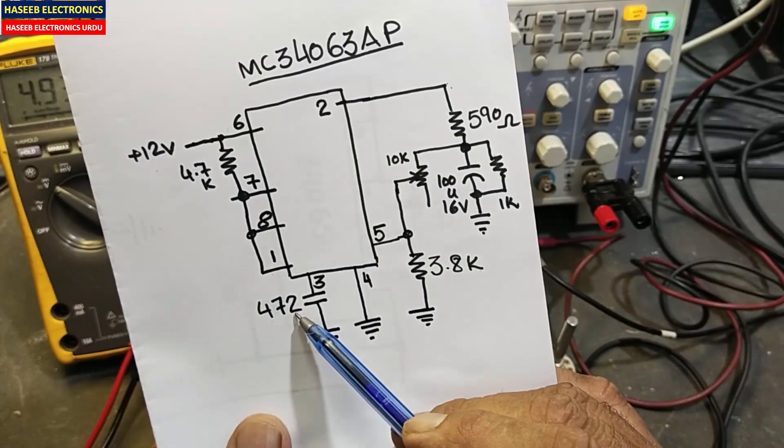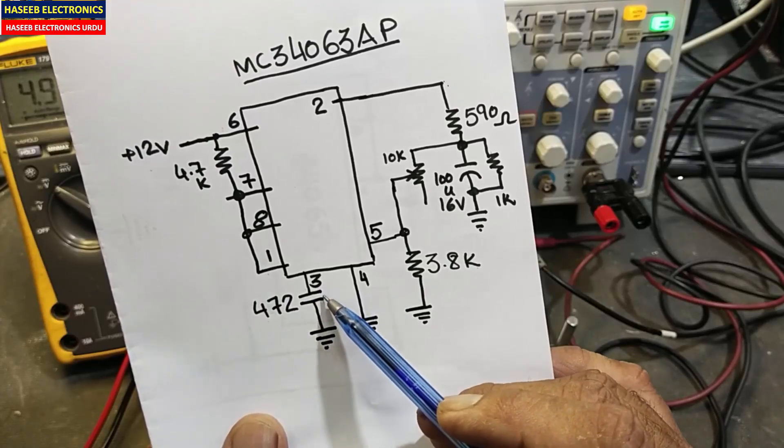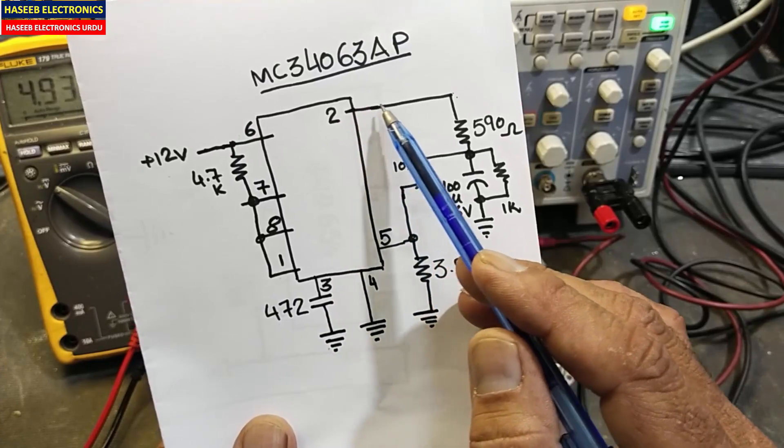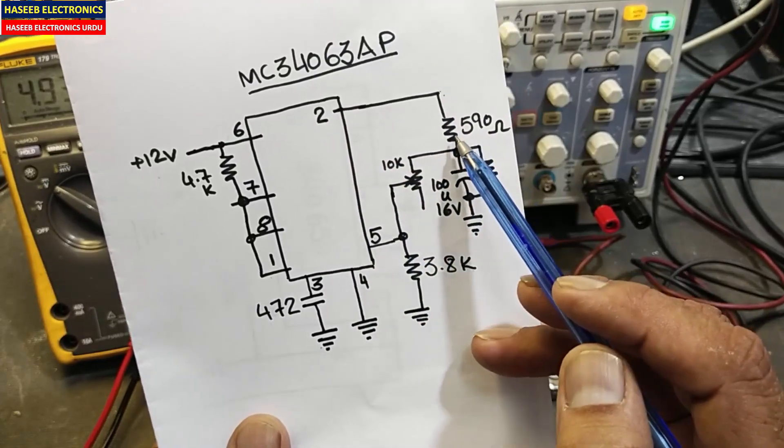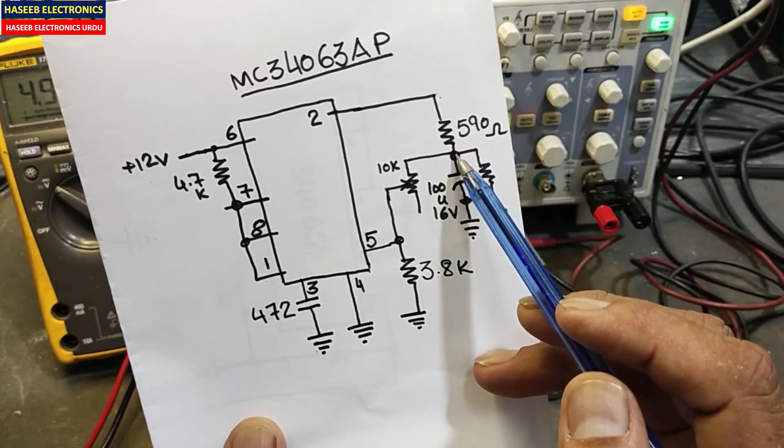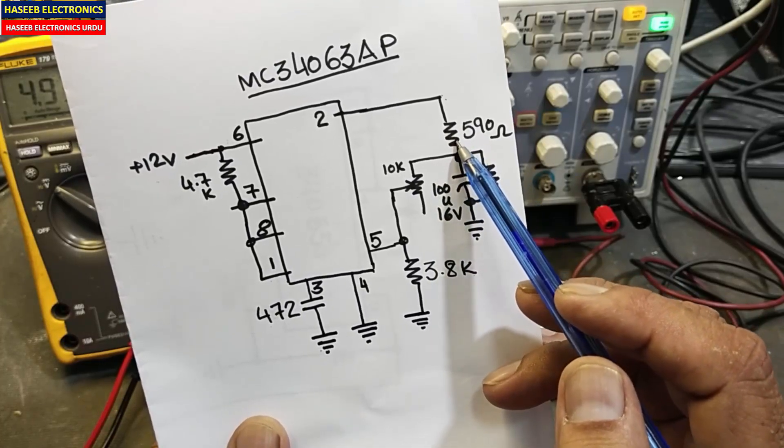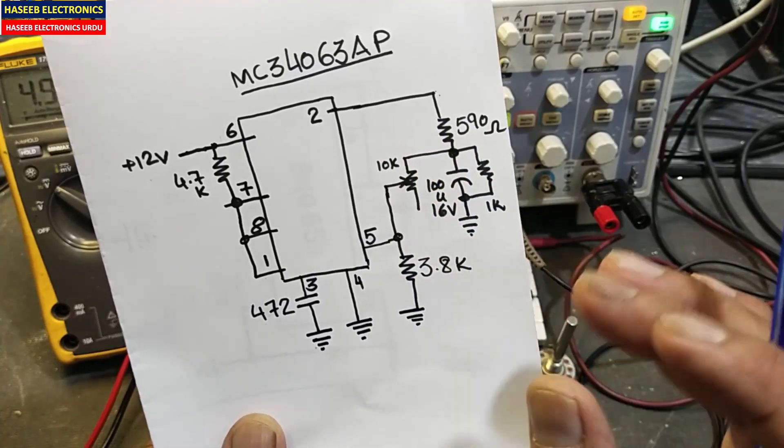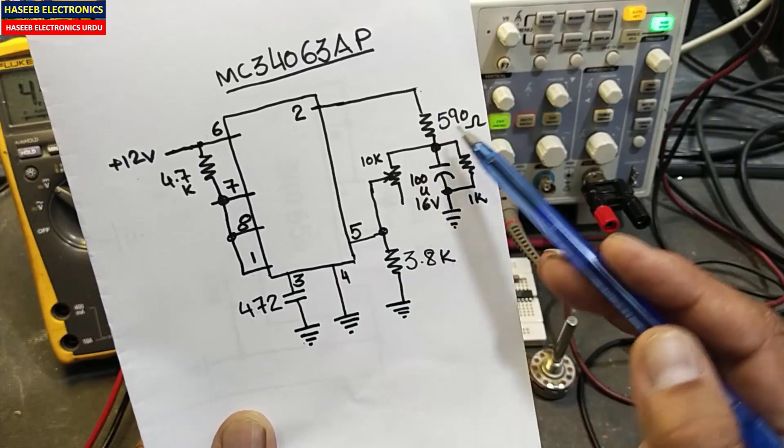472 code, 4.7 nanofarad capacitor at pin number 3 to ground. I am taking output from pin number 2 and I am using a resistor here, 590 ohm resistor. Basically we need inductor here and a Schottky rectifier in parallel, but for test purpose it is the best way to use a passive load or resistive load.